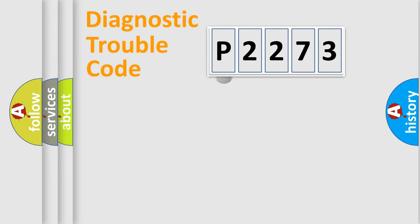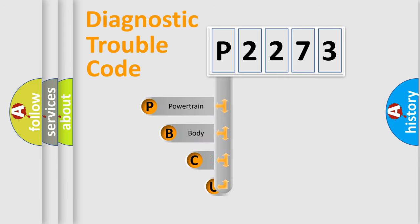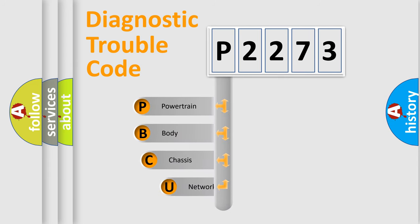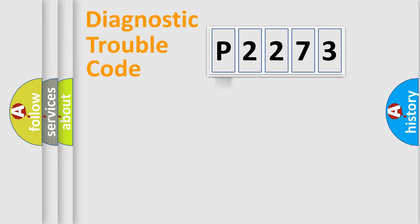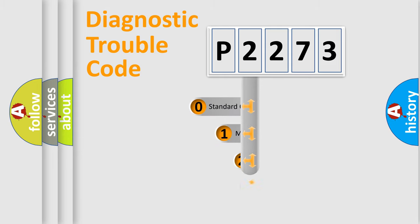First, let's look at the history of diagnostic fault code composition according to the OBD2 protocol, which is unified for all automakers since 2000. We divide the electrical system of an automobile into four basic units: powertrain, body, chassis, and network. This distribution is defined in the first character of the code.